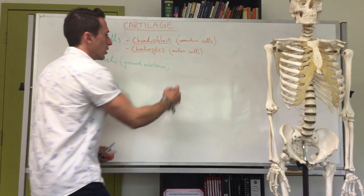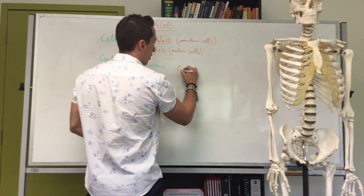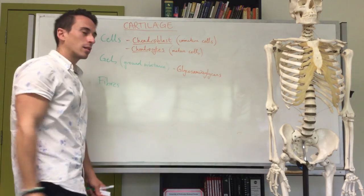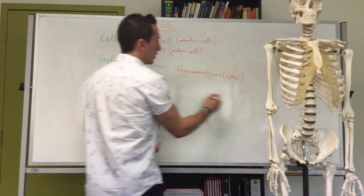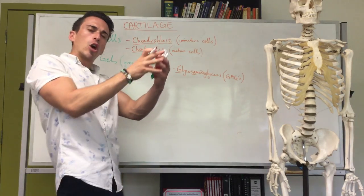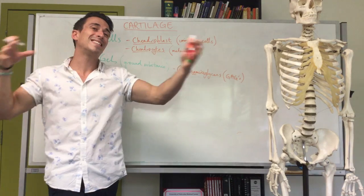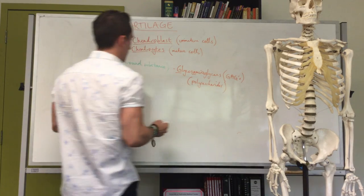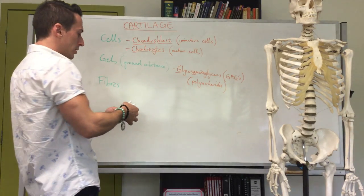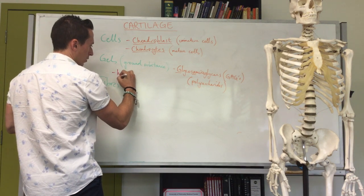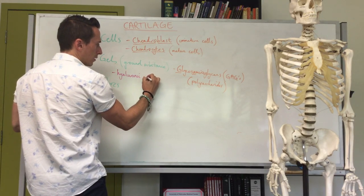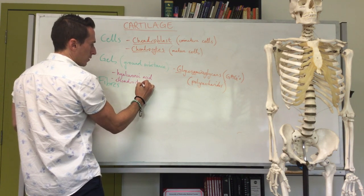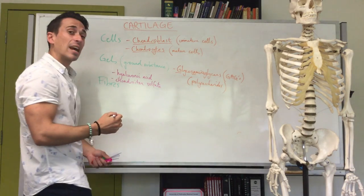The types of gels found in cartilage are made up predominantly of glycosaminoglycans, often written as GAGs. Glycosaminoglycans are just long sugar molecules — polysaccharides. The types of glycosaminoglycans present in cartilage include hyaluronic acid, chondroitin sulfate, and keratan sulfate.